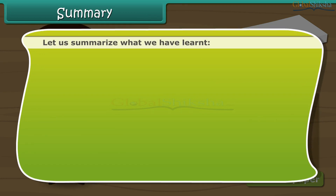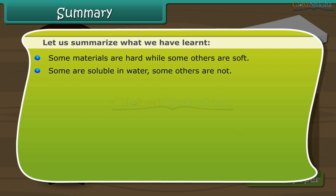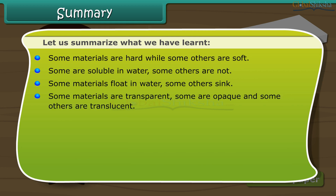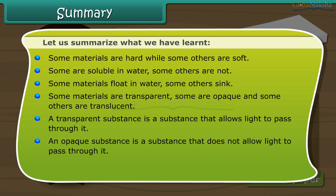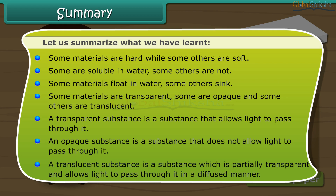Let us summarize what we have learned. Some materials are hard, while some others are soft. Some are soluble in water, some others are not. Some materials float in water, some others sink. Some materials are transparent, some are opaque, and some others are translucent. A transparent substance allows light to pass through it. An opaque substance does not allow light to pass through it. A translucent substance is partially transparent and allows light to pass through it in a diffused manner.